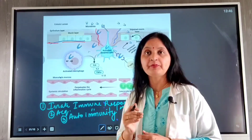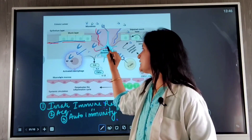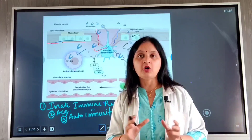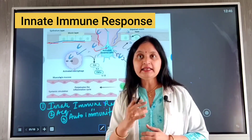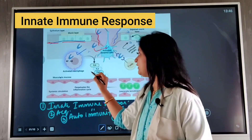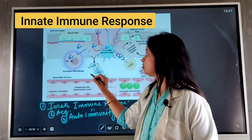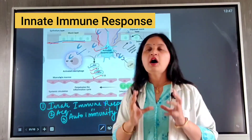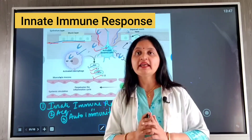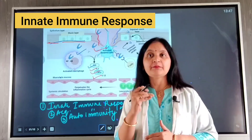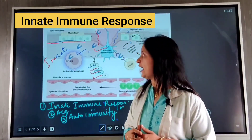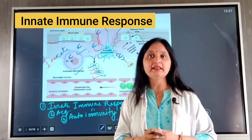Once bacterial antigens and toxins reach the lamina propria, they interact with macrophages and dendritic cells. These innate cells are activated, triggering an abnormal immune response. The macrophages and dendritic cells, aiming to clear bacterial antigens, release pro-inflammatory cytokines such as interleukin-1, interleukin-6, tumor necrosis factor, and interleukin-2, leading to chronic inflammation. This is also known as the innate immune response.